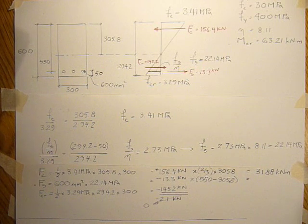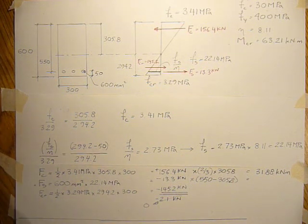So 13.3 times 550 minus 305.8 divided by 1,000 puts into kNm.